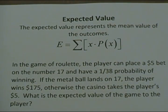Expected value. The expected value represents the mean value of the outcomes. E equals the sum of x times P of x. In the game of roulette, the player can place a $5 bet on the number 17 and have a 1 out of 38 probability of winning.